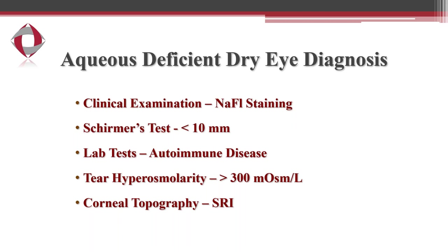Diagnosing this type of dry eye — the most important practical way is clinical examination, looking at and listening to the patient's symptoms. We also have other tests such as a Schirmer's test, which measures the amount of tear production. We can order lab tests if we suspect any autoimmune diseases, and we can test tear hyperosmolarity. Corneal topography can also be helpful. But most of the time, we diagnose dry eye clinically by observing the patient and listening to their symptoms.